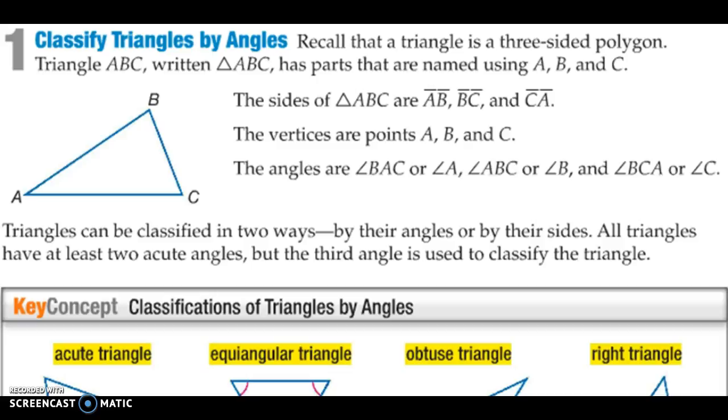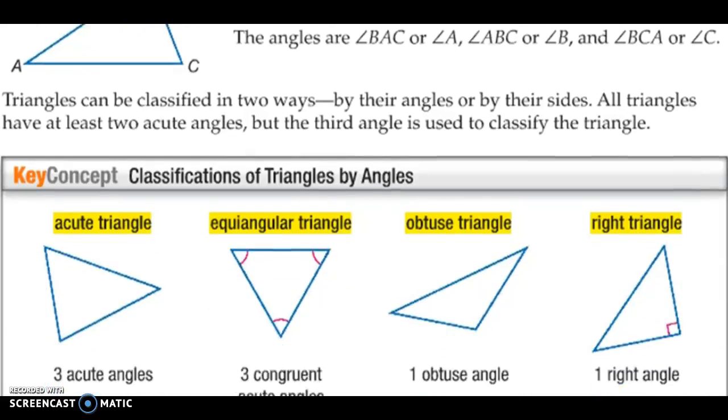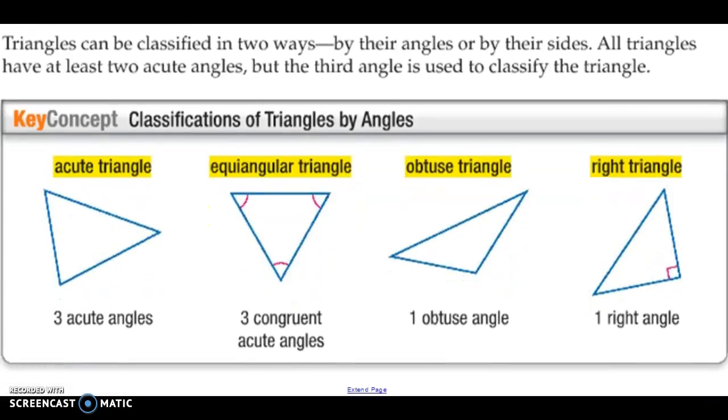Today we're going to be talking about lesson 4.1, which is on classifying triangles. To begin, we can start classifying triangles by angles. For example, we have an acute triangle, which is made up of three acute angles. We also have an equiangular triangle, which is made up of three congruent acute angles.